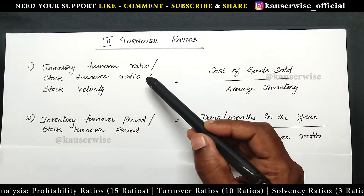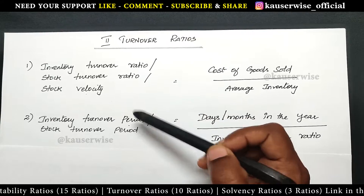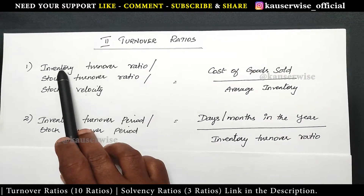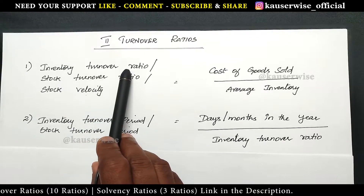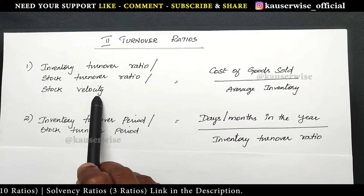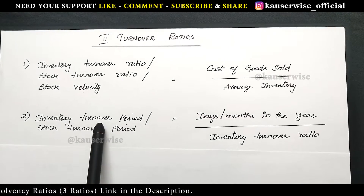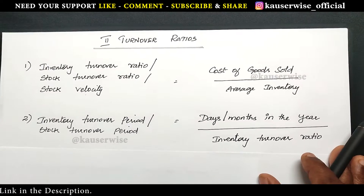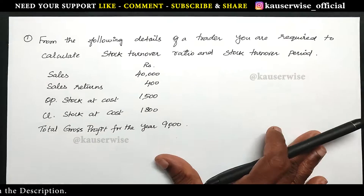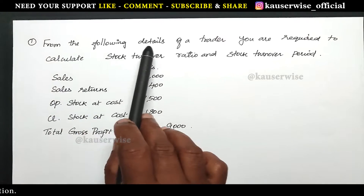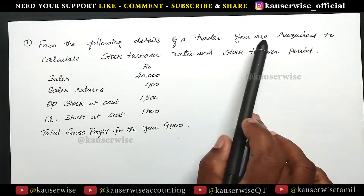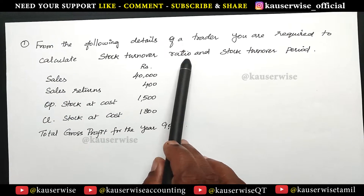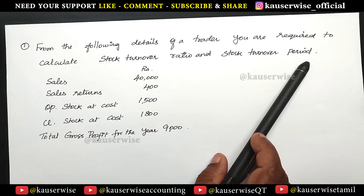In that, first we are going to see two different calculations. Number one, stock turnover ratio, otherwise called as inventory turnover ratio or stock velocity. Number two, inventory turnover period or stock turnover period. Now let's see the problem. From the following details of a trader, you are required to calculate stock turnover ratio and stock turnover period.